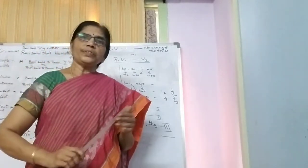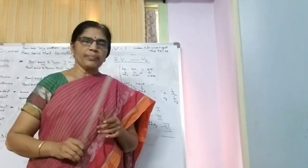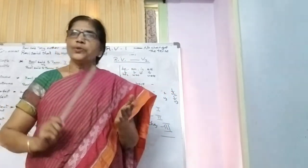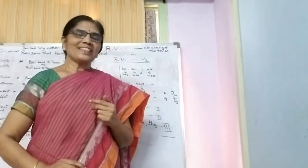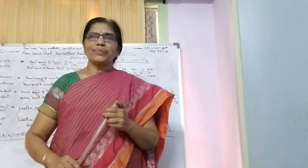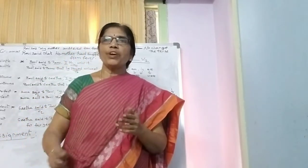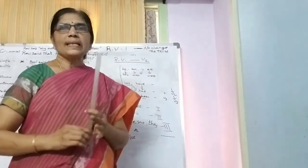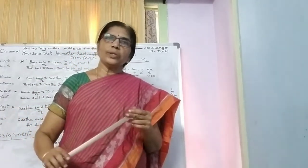Before going to change direct speech into indirect speech, you should have some points in your mind. What are those points? You should know what B forms are, you should have an idea of possessive forms, you should have an idea of tenses, and you should have knowledge of pronouns in four forms — subjective form, objective form, possessive form, and reflexive form. When you know all these things, it becomes easy and you can change any sentence given in direct speech into indirect speech.